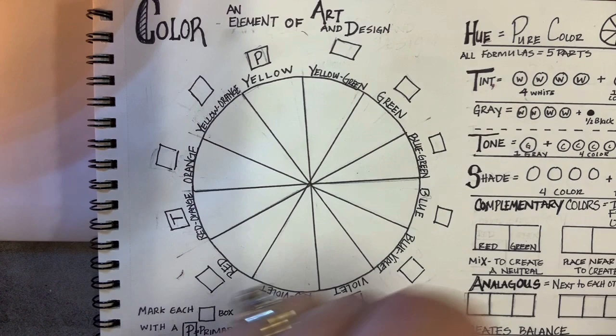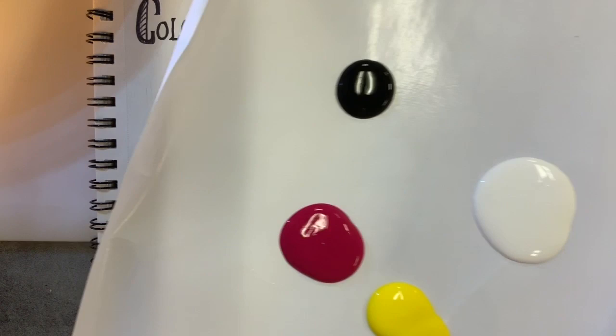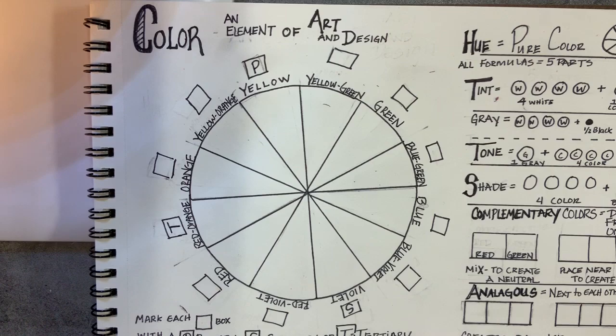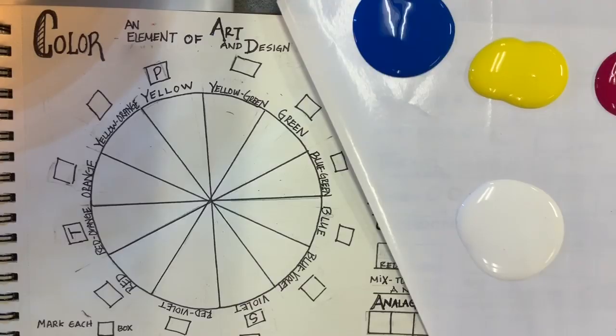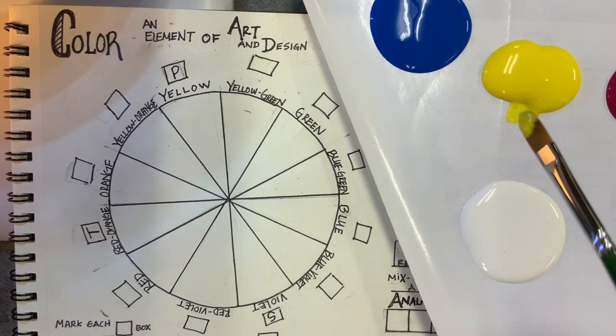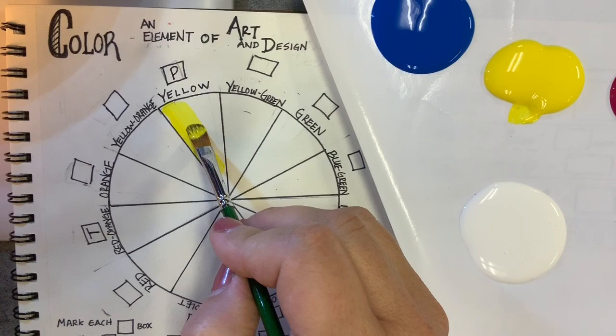All right, here is the color chart and you should have three primary colors plus white and black on your palette. Marked on our color wheel we have red but we'll be using magenta, and blue—I'm actually using cyan. I find that those have a little bit brighter mixes when I'm using paint.